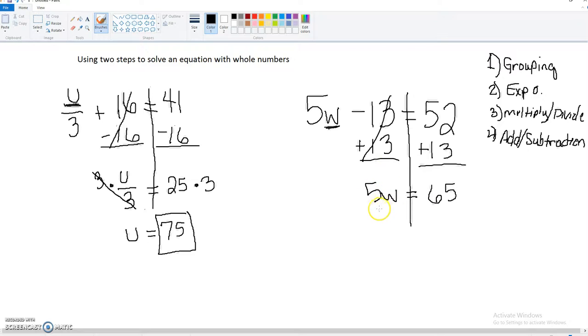And the opposite of multiplication is division. So we're going to divide by 5. So w, in this case, equals 13.